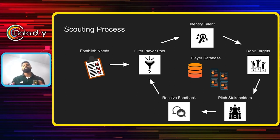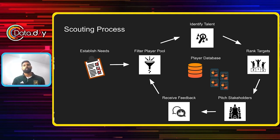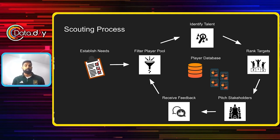After that, we pass it along to our stakeholders — coaching staff, general manager, technical director — and say, 'Here are our top three targets; this is who we think would be the best replacements, let us know what you think.' They give us feedback. If they like the player, they move forward with pursuing them: figuring out the price, talking with the agent and the club, seeing their level of interest. If they aren't a fan, they provide feedback on why they don't like them or think they may not be a good fit, and that restarts the cycle.